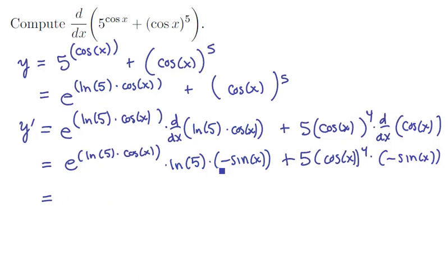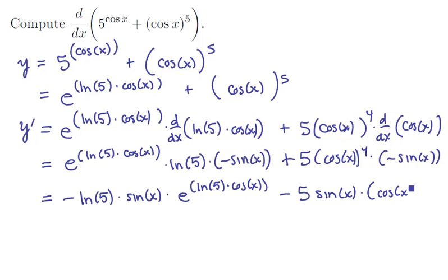Let's clean it up a little bit. Notice that we can bring the negative out. So this is negative ln of 5 times the sin of x times e to the power of ln of 5 times cos x. Then the next term, we've got a negative 5 sin of x times the cos of x quantity raised to the 4th power.